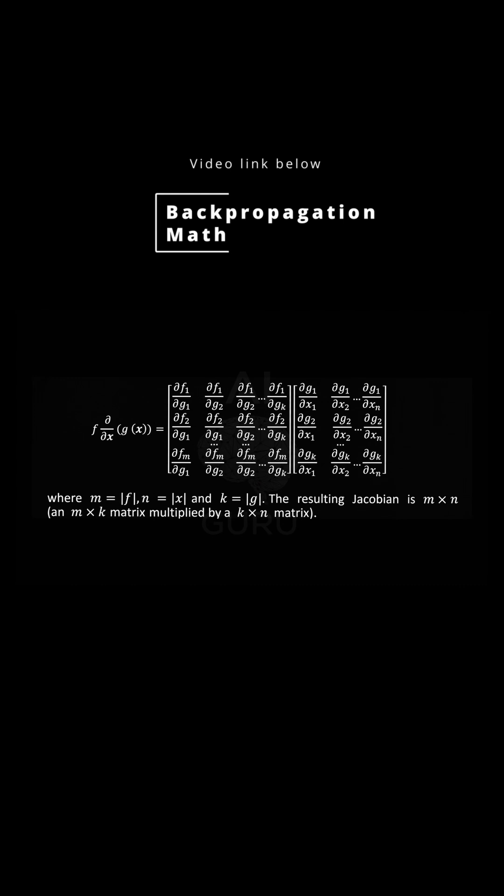The first Jacobian, the partial of f over g, is an m by k matrix. The second one, partial of g over x, is a k by n matrix. And when you multiply an m by k matrix by a k by n matrix, you get an m by n matrix.